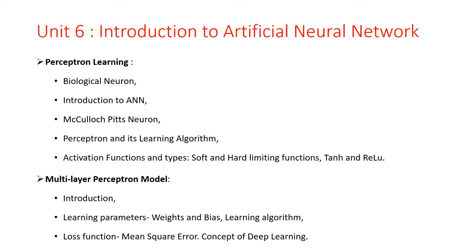The second part is the Multilayer Perceptron Model, where we discuss the learning parameters: weights, biases, and learning algorithms. And last is the loss function, mean square error, and the concept of deep learning. So this is a simple overview of Unit 6, which is Introduction to the Artificial Neural Network.